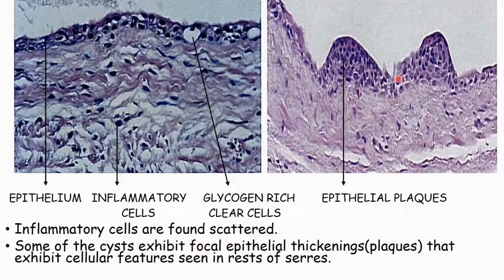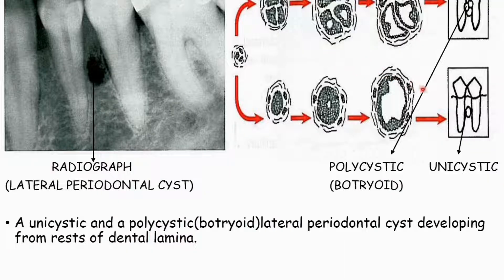Some lateral periodontal cysts exhibit focal epithelial thickening — epithelial plaques that show cellular features seen in the rests of Serres. Although most lateral periodontal cysts are unicystic, they can occasionally be polycystic, a form originally described as the botryoid odontogenic cyst.